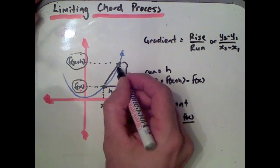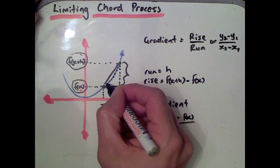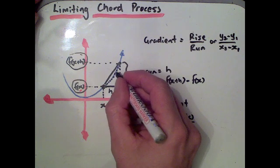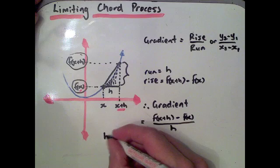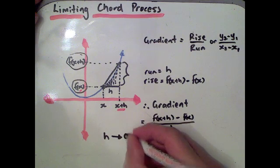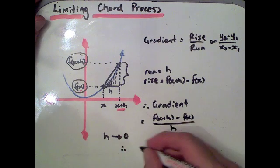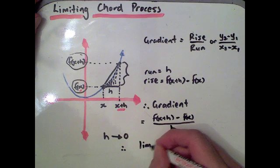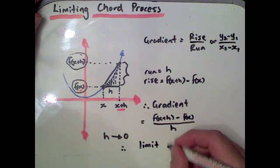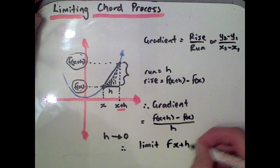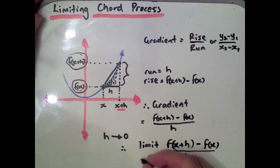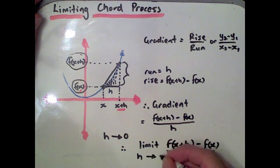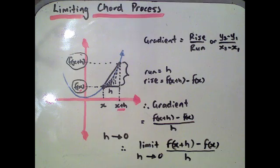We don't want just the gradient between two points; we want the gradient at a point. So as our h value gets closer and closer to that point, the h value starts to decrease. We're looking at when h tends towards 0. So we're finding the limit of f of x plus h minus f of x over h as h tends towards 0. That's our formula to find the gradient at a point.